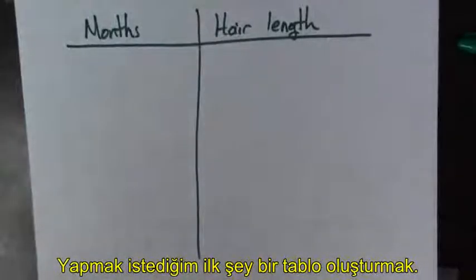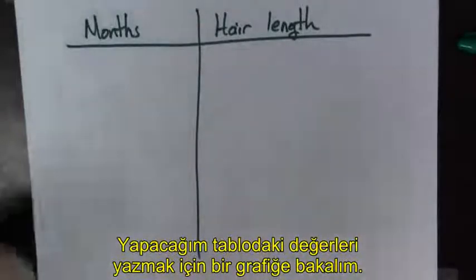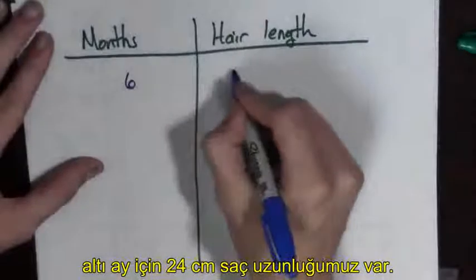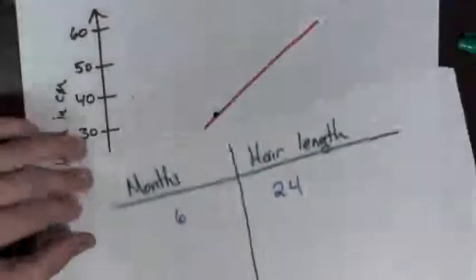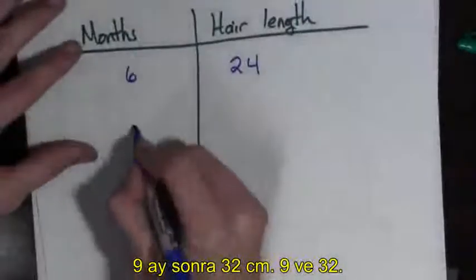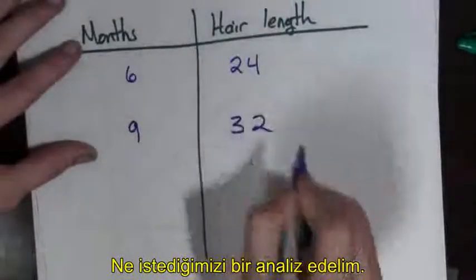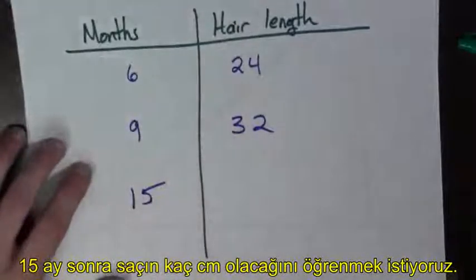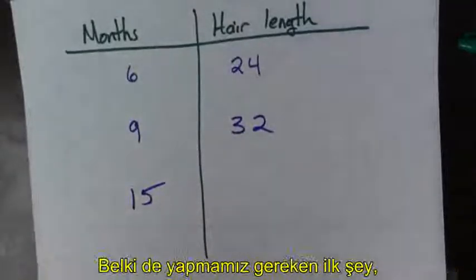The first thing I want to do is I want to make a table. Let's put these points on the table. After six months, the hair length is 24 centimeters long. After nine months, the hair length is 32. And let's write down what we want, too. We want to know how long the hair is after 15 months.